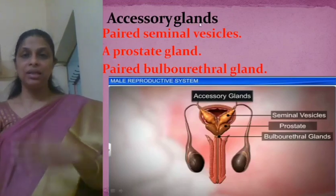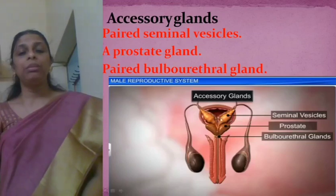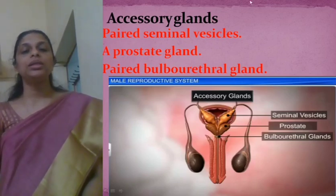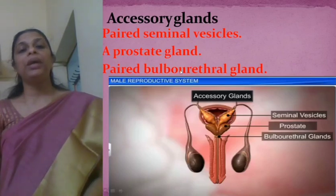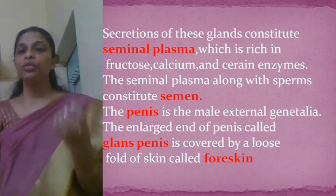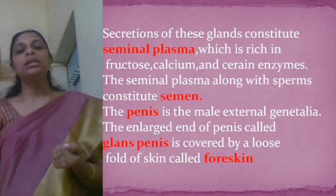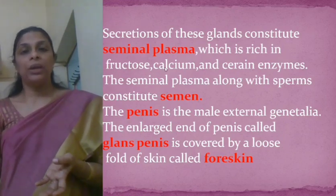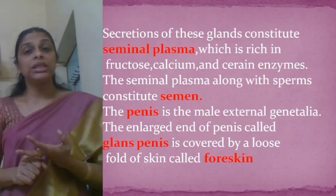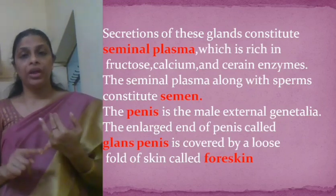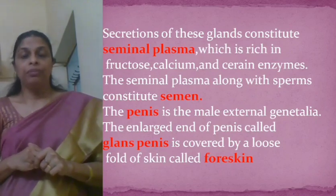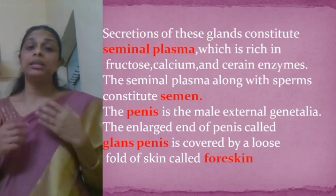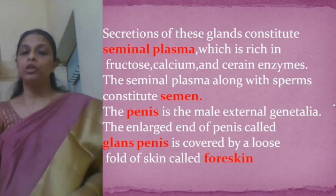The accessory glands include a pair of seminal vesicles, one prostate gland, and a pair of bulbourethral glands. The secretions of these glands constitute the seminal plasma, which is rich in fructose, calcium, and certain enzymes. When sperms are combined with the seminal plasma, it is called semen.